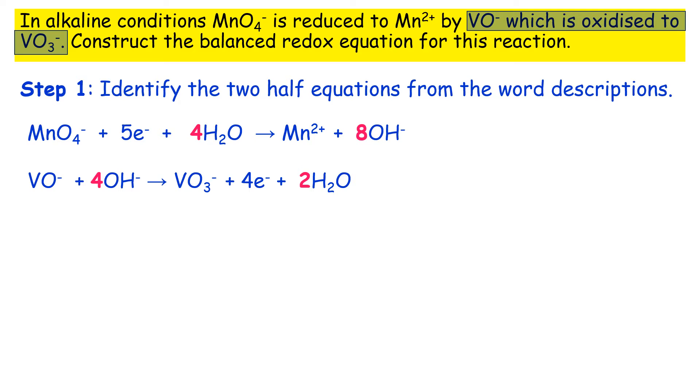So that means that in order for the minus charges to be balanced out you need four OH-s on the left hand side because you have four electrons on the right. That leads to two H2O's being required on the right hand side as well.